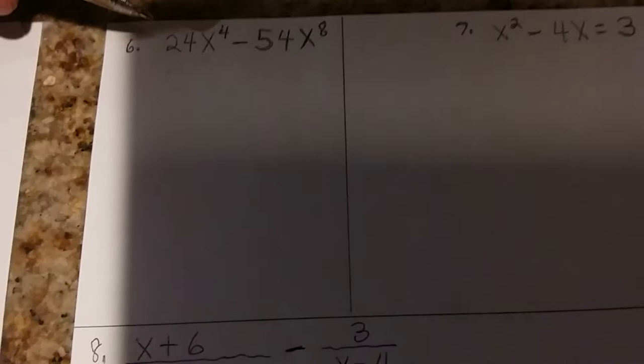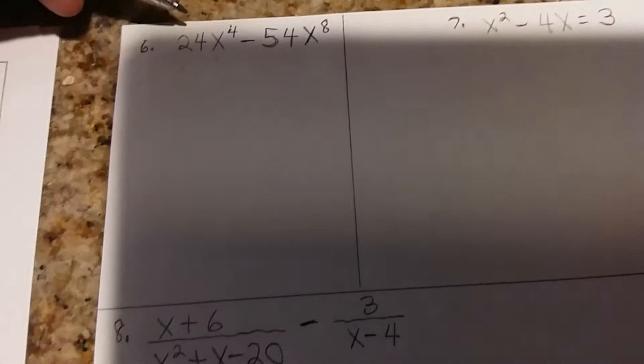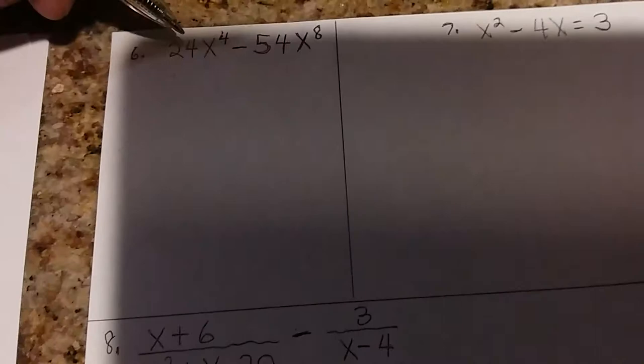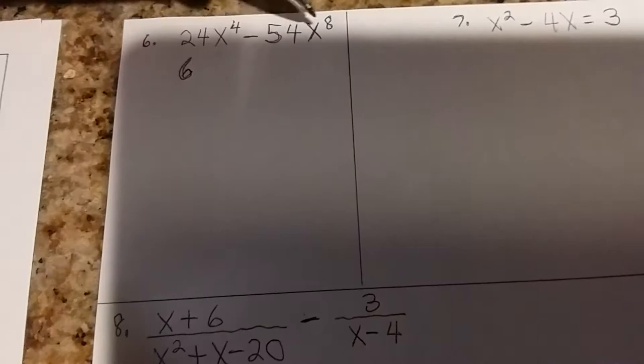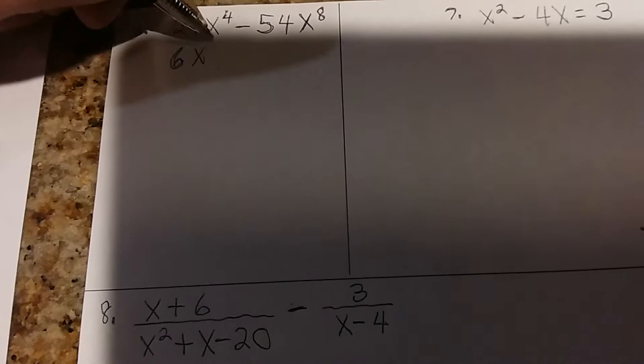It says factor completely. So we're going to start out looking for the greatest common factor. Remember to always look for that when you're factoring. In this case, 24 and 54. You say to yourself, what's the largest number that goes into 24 and 54? That would be six. Then you look to see if the variables are the same. They are. So you take out the one with the lowest exponent, x to the fourth. You may recall this is called the greatest common factor.